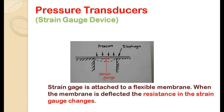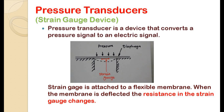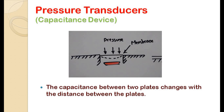Next is the capacitance transducer, which is essentially a capacitor with variable capacitance. It comprises two parallel metal plates separated by a material such as air. When the distance between the plates changes, the capacitance also changes. The gauge is designed so that when unknown pressure is applied, the distance between the two plates varies, and consequently the capacitance varies as well. By measuring these changes in capacitance, we can measure the pressure.